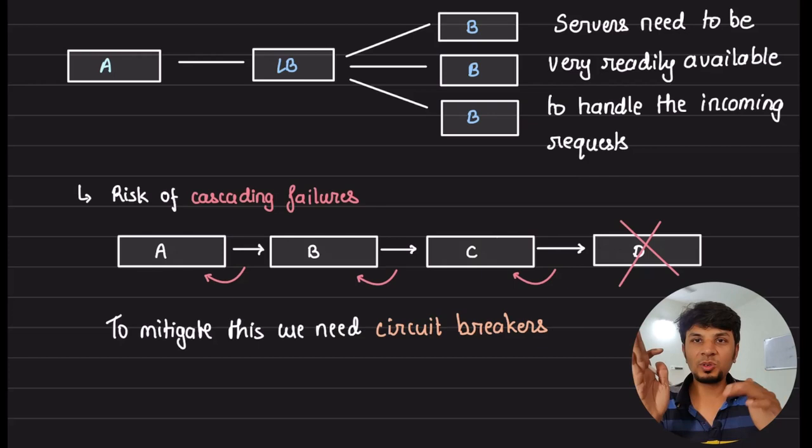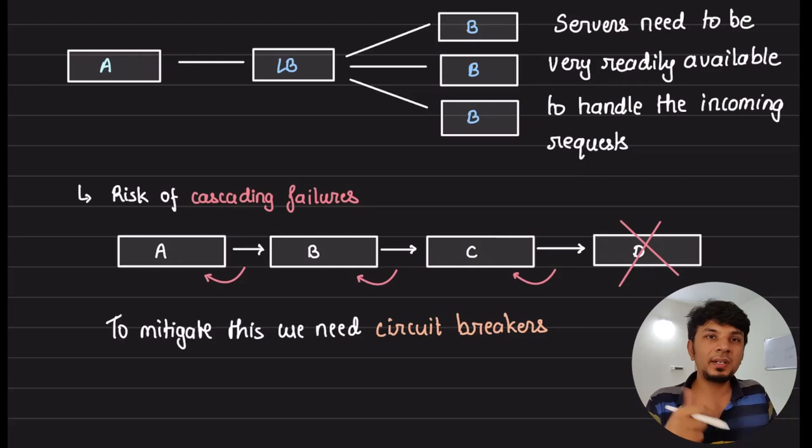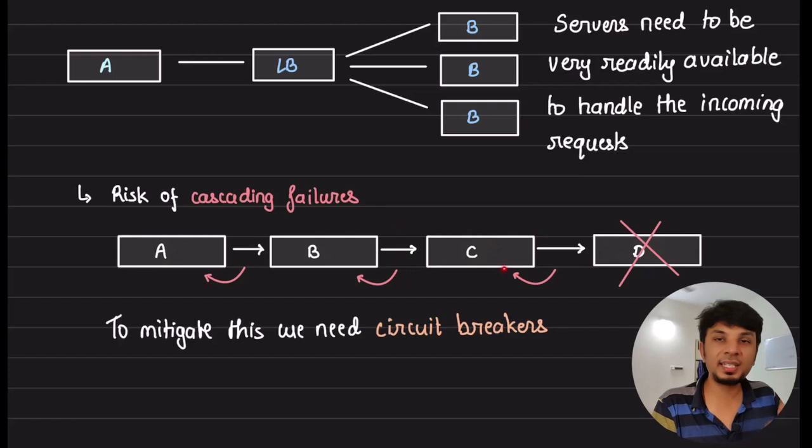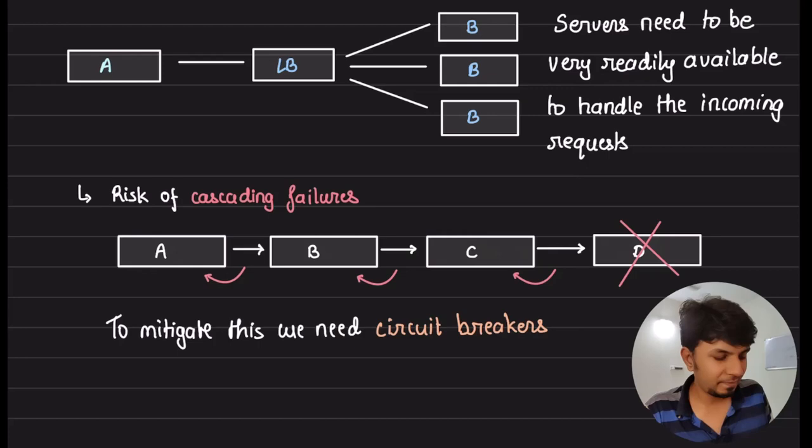To stop cascading failures, you need circuit breakers in place. If service D is down, service C won't even invoke D's API because it knows D is down — the circuit is broken — preventing the cascading failure from propagating up the chain.